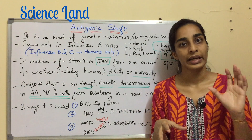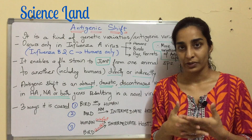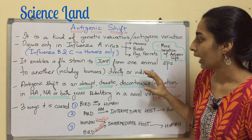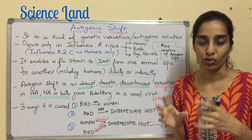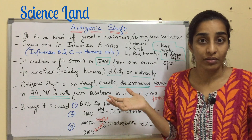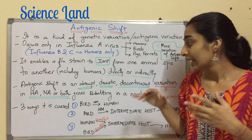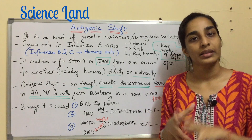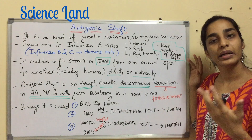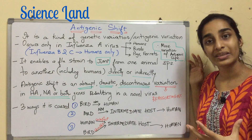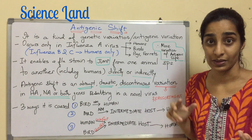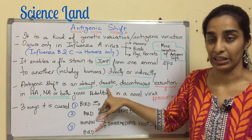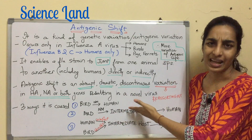Both HA and NA have essential functions in infection. Antigenic shift occurs in HA, NA, or both. This variation is all of a sudden — it is discontinuous and will not happen on a regular basis, perhaps once in many years. Why is it called drastic? Because the effect of the novel strain is so significant that it is called a drastic variation. And of course, it results in a novel virus.